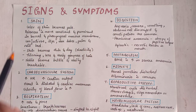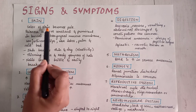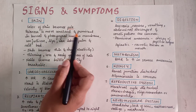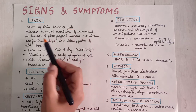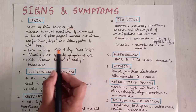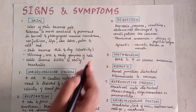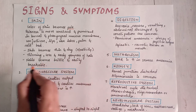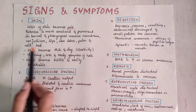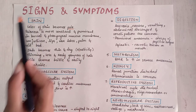Now we come to the signs and symptoms. First, the skin: the color of the skin becomes pale, which is a very important sign of anemia. Paleness is more constant and prominent in the buccal and pharyngeal mucous membrane, conjunctiva, lips, earlobes, palms, and nail beds. The skin becomes thin and dry and loses its elasticity. Thinning, loss, and early grayness of hair can be seen. Nails become brittle and easily breakable.